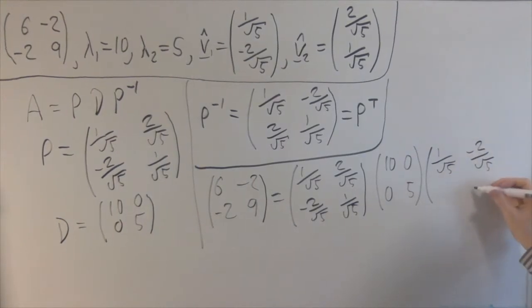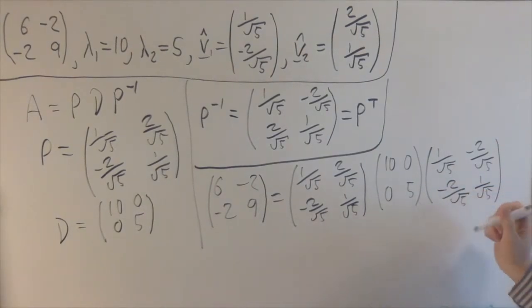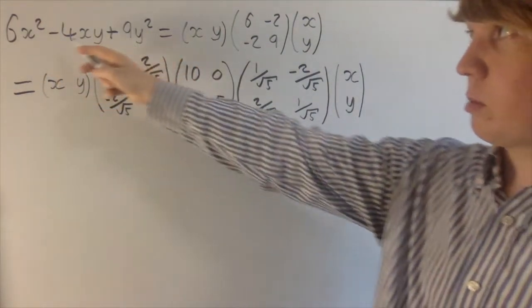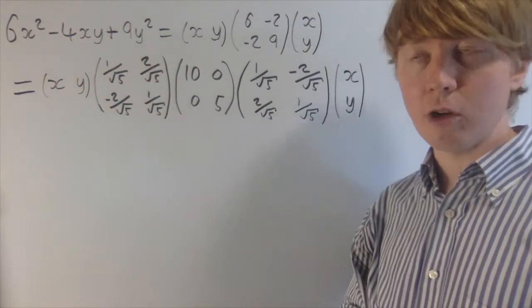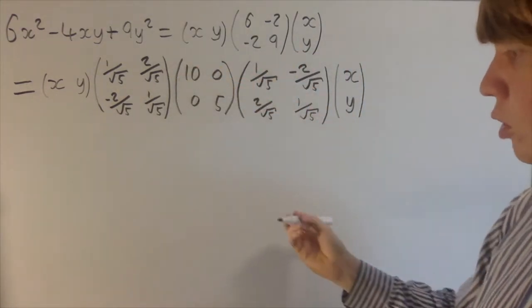And then what we'll do next is we'll actually have a look at what does this tell us in the context of the original problem. So we're trying to solve this inequality. Remember that we're trying to show that this expression here is always greater than or equal to 0. And we've written it using a matrix, and then we've written the matrix in this expanded form.